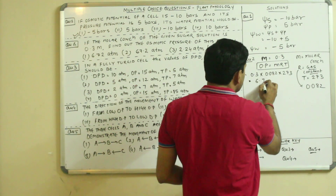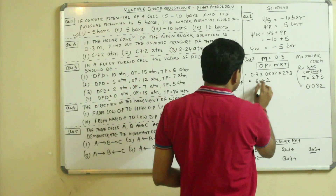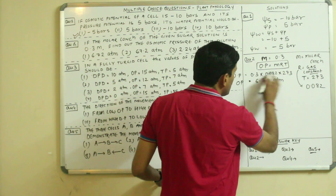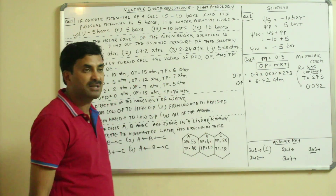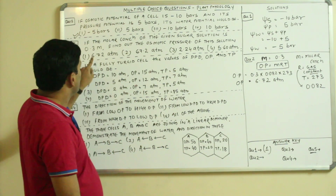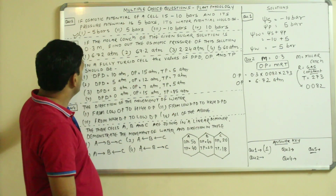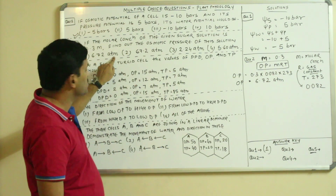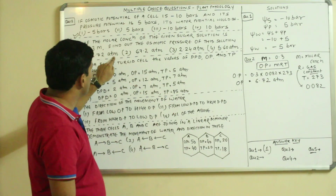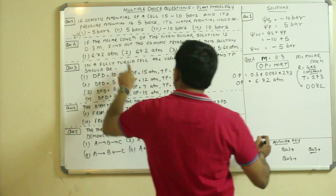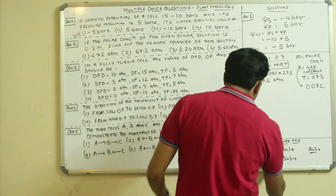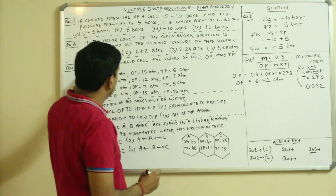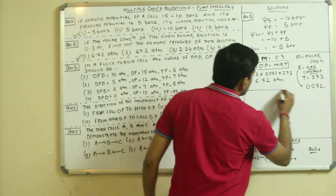Multiplying all three values gives approximately 6.72 atm. You can see that in question 2, the first option is 6.72 atm, so the answer to question 2 is option 1.